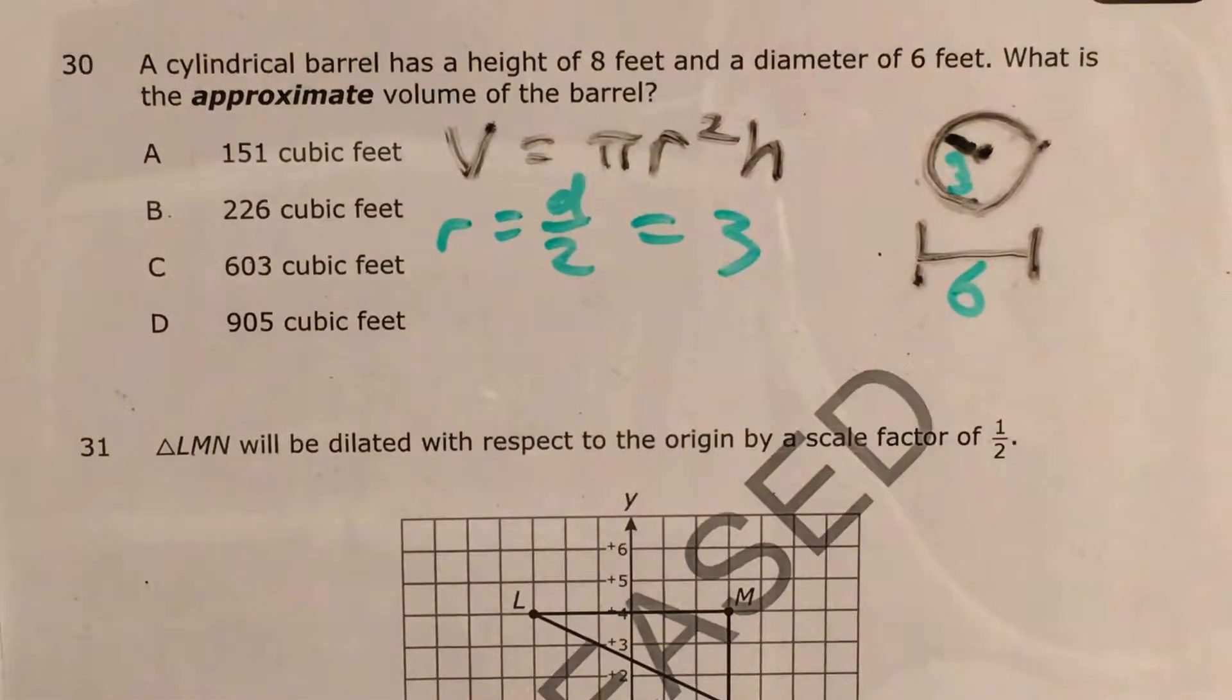So now that I know that my radius is 3, it tells me my height is 8, so that's all the information I need to go ahead and use this formula and solve this problem.